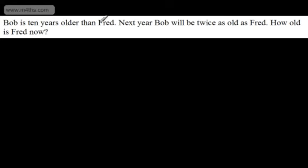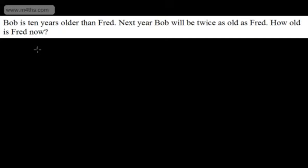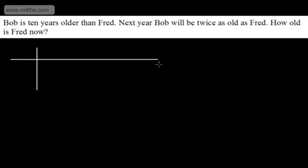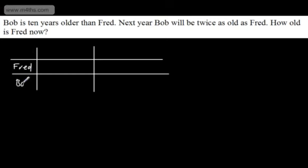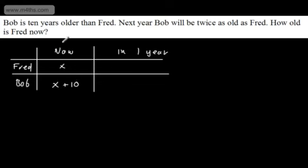Bob is 10 years older than Fred. Next year, Bob will be twice as old as Fred. How old is Fred now? This is a typical age problem. The best way of doing this is in a table. We'll have Fred and Bob as columns, and rows for 'now' and 'in one year'. Let Fred be X years old now. Bob is X plus 10. In one year, Fred will be X plus 1 and Bob will be X plus 11.